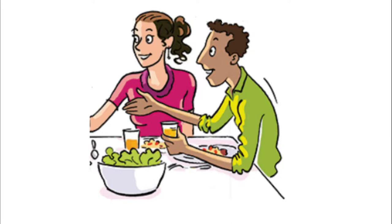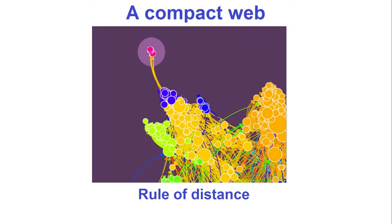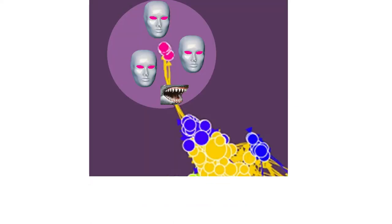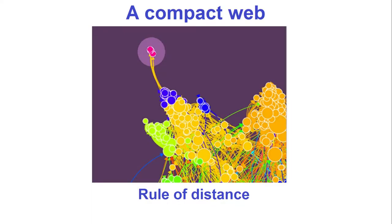The arrows pointing away from you correspond to the certifications you have granted. To certify someone you need to know them well enough: be able to recognize their face, contact them by several different means, and if possible have contacts in common. You must also ensure the person has understood these imperatives, since they will be able to certify in turn. A region of the network with few or poorly varied links poses a danger, as a small number of ill-intentioned members could develop a sub-network of false identities. To avoid this, there is a rule of distance that limits the certification capacity of such members.